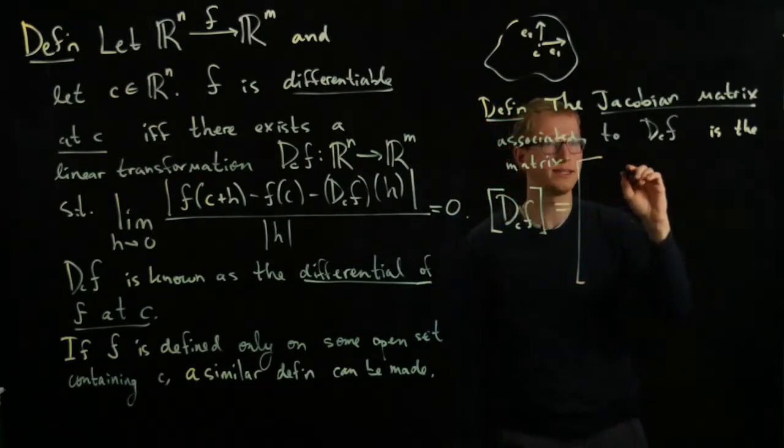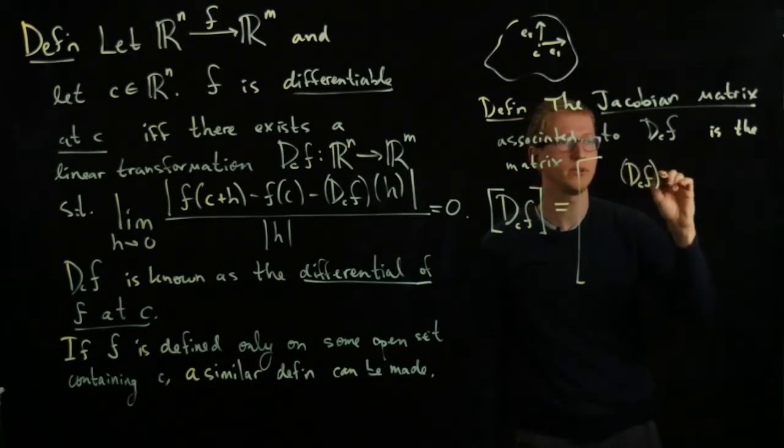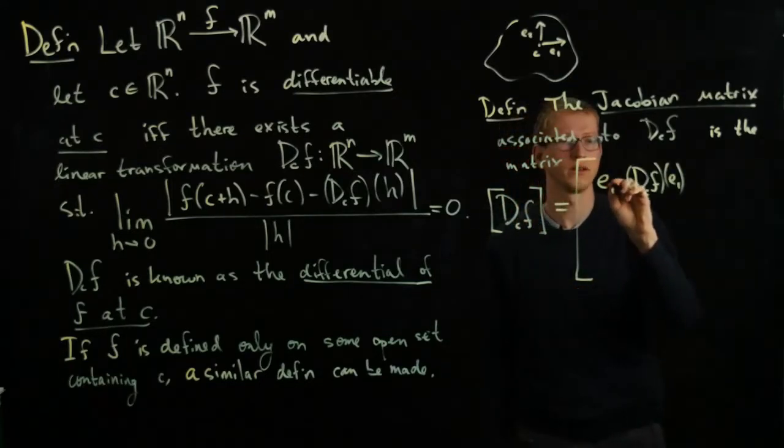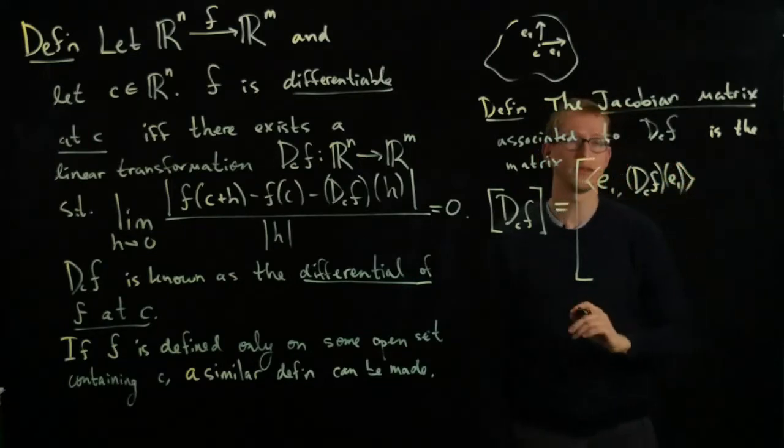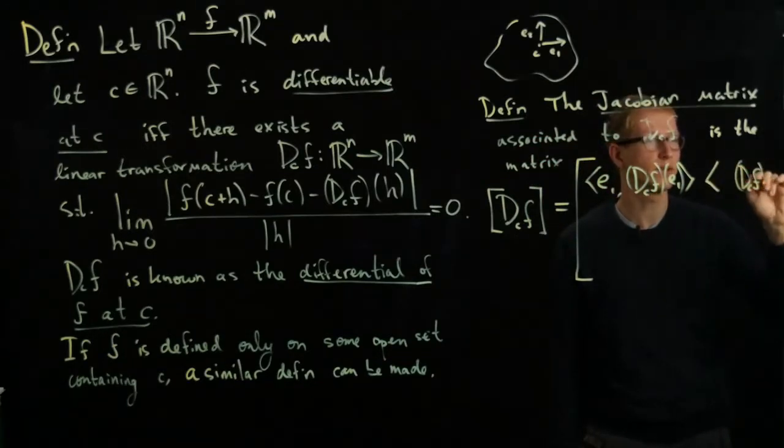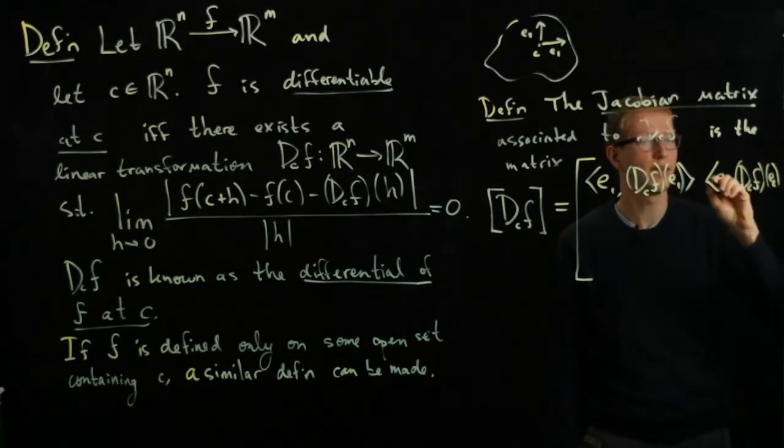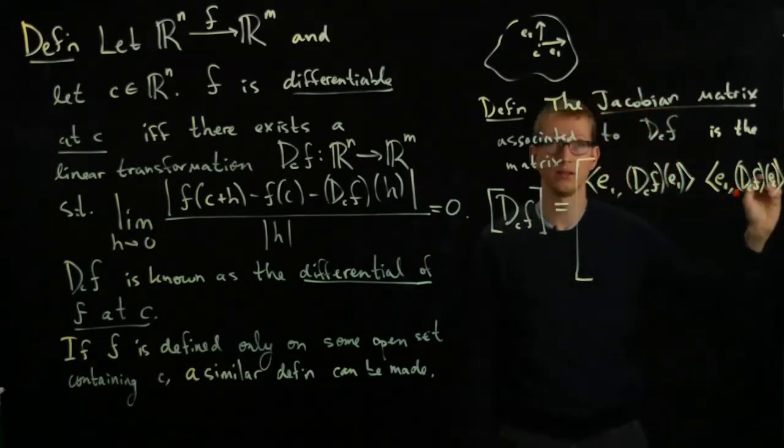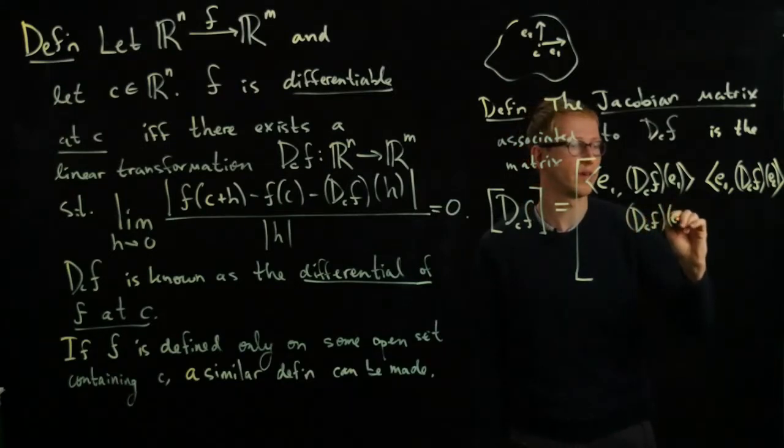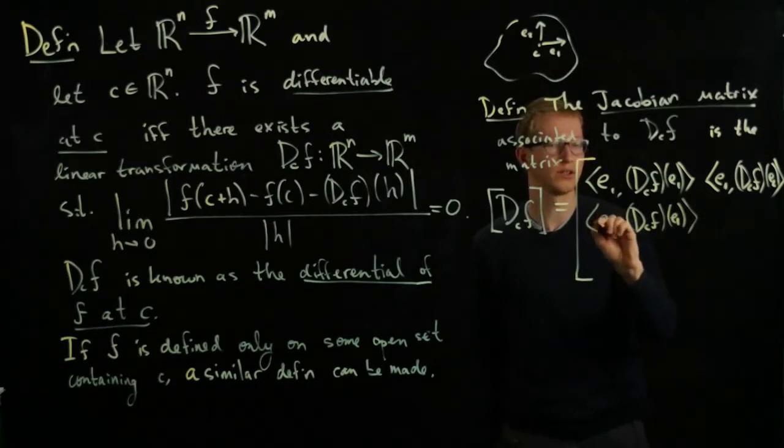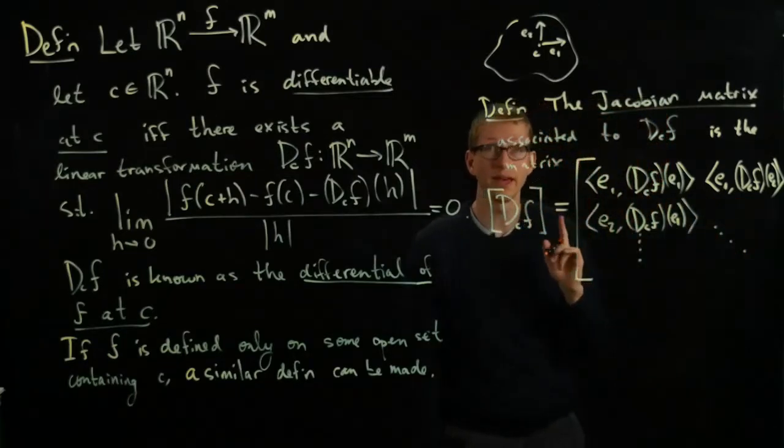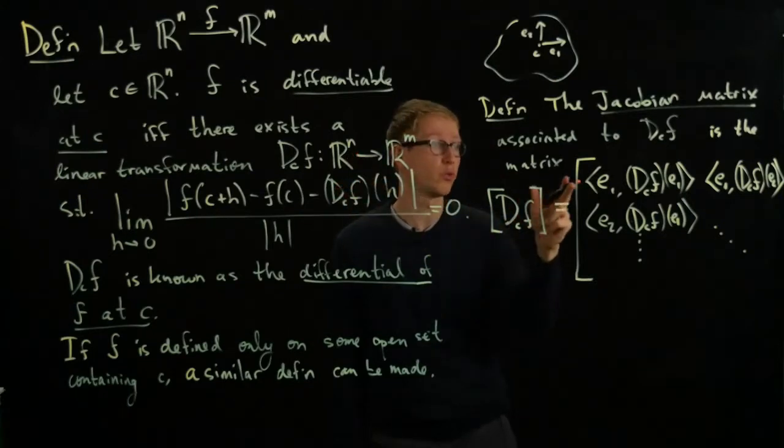Then this is given by taking the derivative of F, evaluating it at the first vector, let's say E1, and then taking the inner product of that vector onto the first one. This would be the first entry of the matrix. The second entry would be taking the derivative, evaluating it at the second unit vector, and then projecting it onto the first, and so on. And likewise if I go down in this direction, I'll still take the derivative and evaluate it at the first vector, but this time I'll project onto the second unit vector, and I'll keep doing this in this fashion.